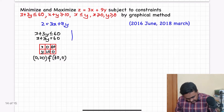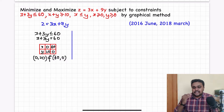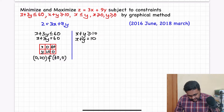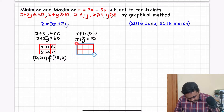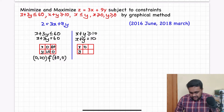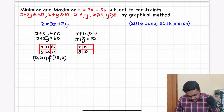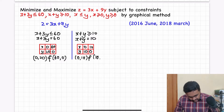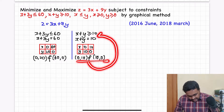The second constraint is x + y ≥ 10. Converting to equality: x + y = 10. Using a tabular column: when x = 0, y = 10; when y = 0, x = 10. So the points (0, 10) and (10, 0) lie on this line.